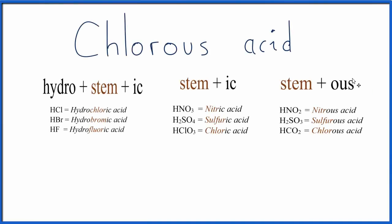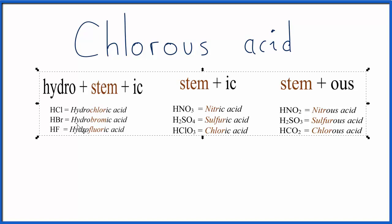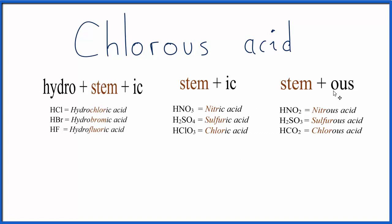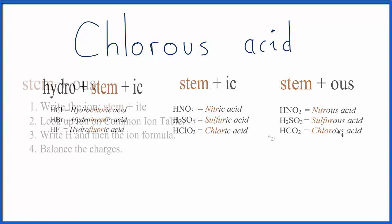To write the formula for chlorous acid, we'll use this table here and work backwards. We can see there's no hydro, and it doesn't end in IC, but it does end in OUS. So this is the type of acid we're dealing with, and we'll use the rules for this acid.